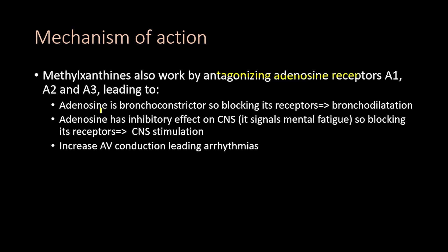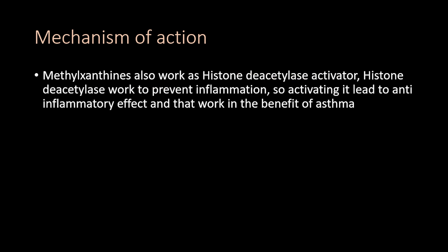The methylxanthines also work by antagonizing the adenosine receptors A1, A2, and A3, leading to multiple effects. Adenosine is a bronchoconstrictor, so blocking its receptors results in bronchodilation. Adenosine has an inhibitory effect on the CNS — it signals mental fatigue — so blocking its receptor leads to CNS stimulation. Antagonizing adenosine also increases AV conduction, which may lead to arrhythmias.